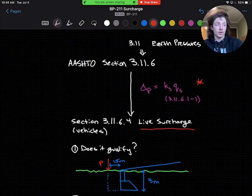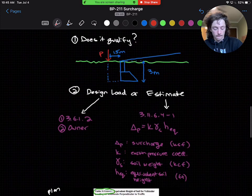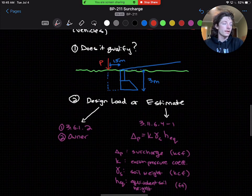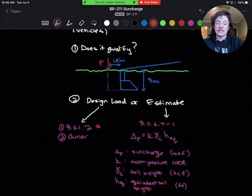Second, if the load qualifies, we have two options. We can follow the design loadings, which are either found in Article 3.6.1.2 or specified by the road owner—the heaviest vehicle that is going to be driving down that road.